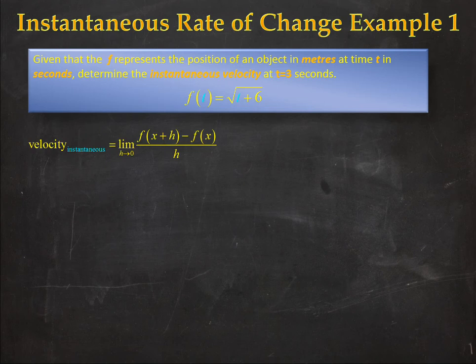One way would be to use the limit as h goes to 0 of f(t+h) minus f(t) over h and evaluating this limit would give me an expression in terms of t and all I'd have to do is substitute 3 in for t and I would have the answer to this question.